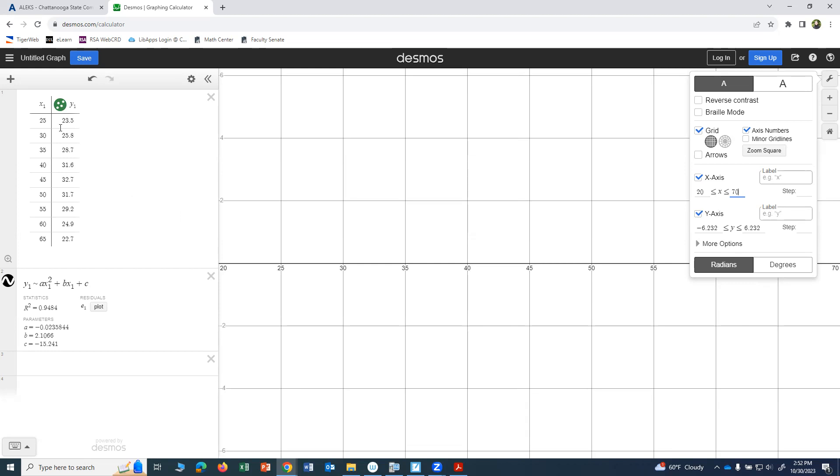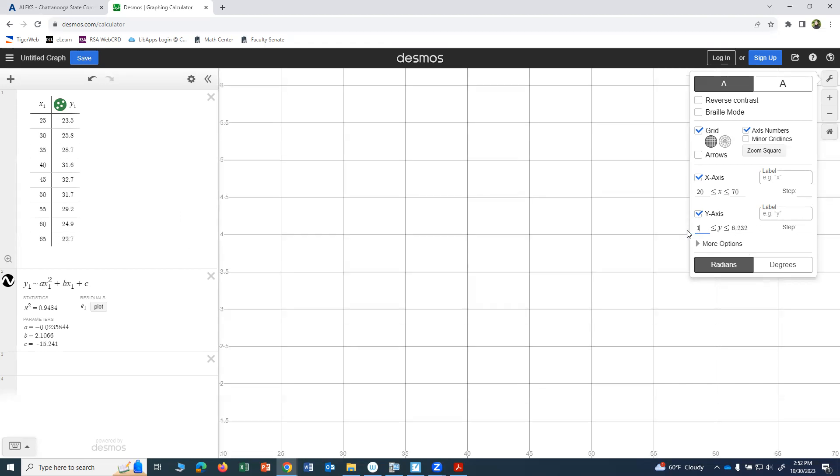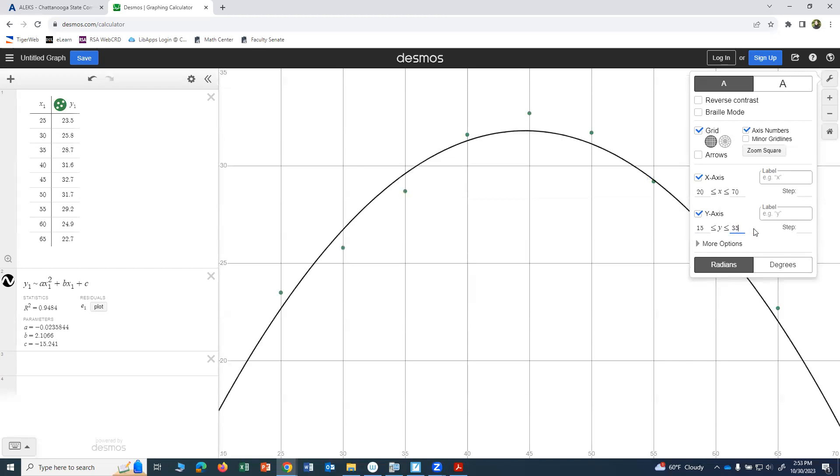For the y, I want to do the same thing. Look for your smallest y value here. My smallest y value is 22.7, so I'm going to go ahead and do 20. And my highest y value that I see is 32.7, so I might go ahead and do 35. I've got this great scatter plot and the regression graph.